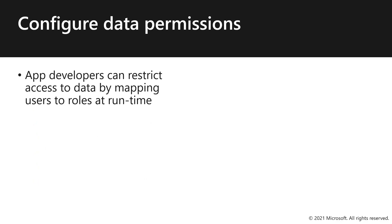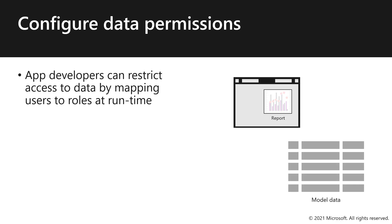App developers can restrict access to data by mapping users to roles at runtime. Let's now consider an example. Here's a report and its underlying model data. The model data represents global sales. When User 1 views the report in the app, they see a filtered subset of model data related to who they are.